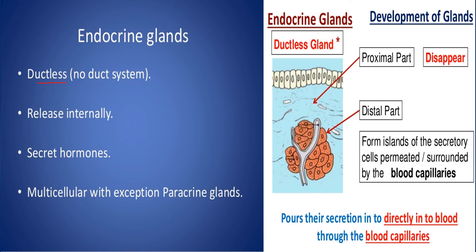Some epithelial cells are invaginated to form a cord-like structure, which is later divided into two regions: the proximal part and the distal part. In endocrine glands, the proximal part cells disappear. Only the distal part remains, forming the gland and pouring secretions into the surrounding blood capillaries. Such glands are called endocrine glands. They are multicellular, with the exception of paracrine glands, and their secretions are called hormones.